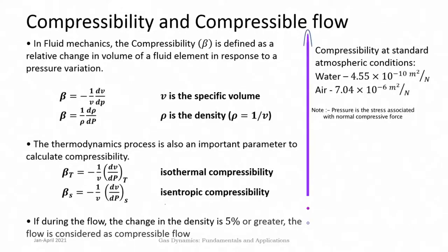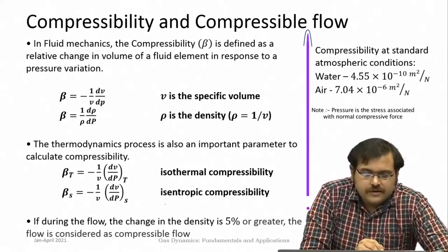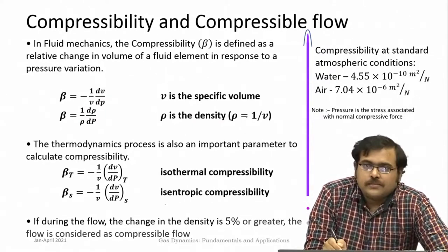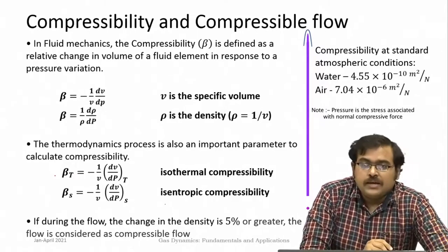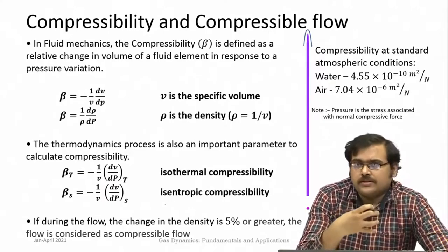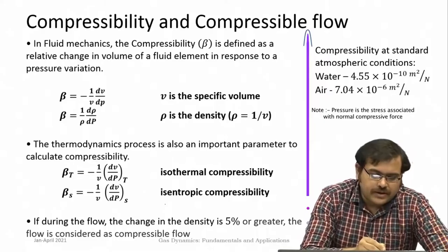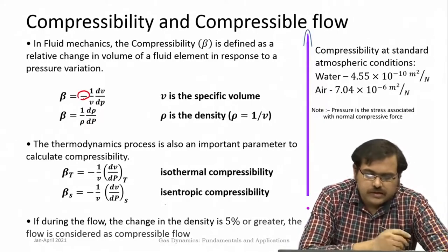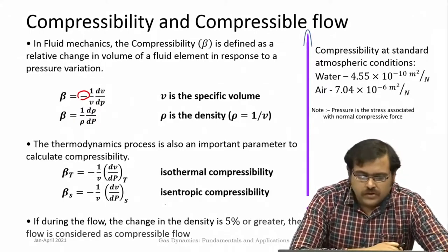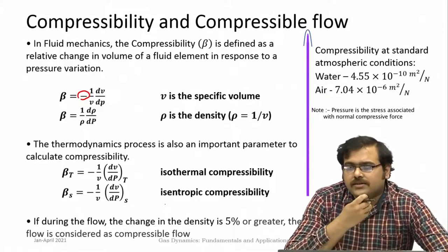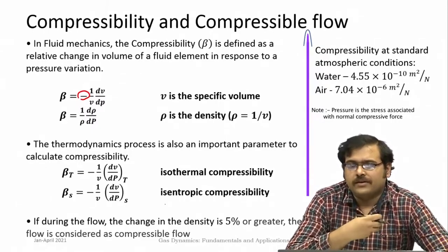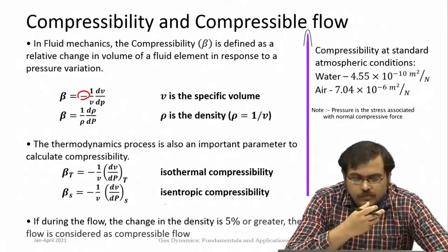Mathematically it is represented as beta equals minus 1 by v, dv by dp, where v is the specific volume. It can also be represented in terms of density, because density is 1 by specific volume, so it becomes 1 by rho, d rho by dp. When you apply pressure, the volume decreases — hence the negative sign — but density will increase. For any particular fluid we can define the compressibility, which tells us how much its volume will change.